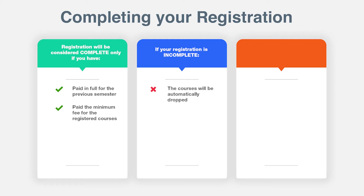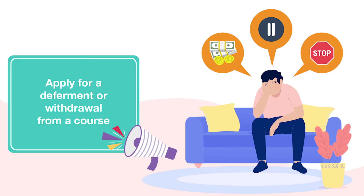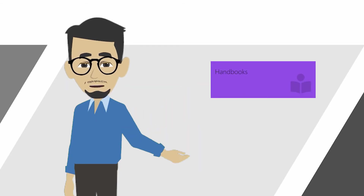If you have taken some courses at another recognised university or college before coming to OUM, you can ask for a credit transfer. You can transfer credits throughout your first year, but this is allowed only for courses which you haven't registered for yet. You can also apply for a deferment or withdrawal from a course if you need some time off. Please check out the handbooks for the procedure.